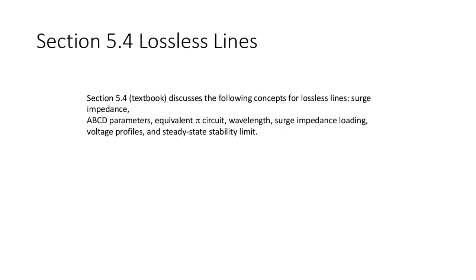We are already familiar with the lossless line. What's the lossless line? A lossless line is where we neglect R and G. Why do we do the lossless line? To simplify the circuit. As an engineer, you always try to do something that gives you a hint or a range of results. So lossless line does not mean we don't have losses in reality. As an engineer, always have preliminary data in front of you, so you can compare what the computer gives and what you expect.